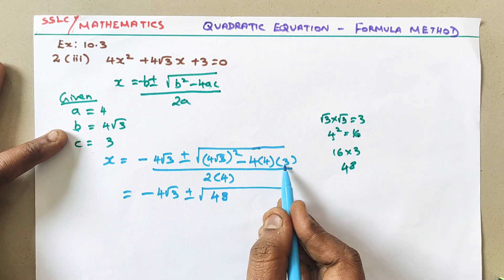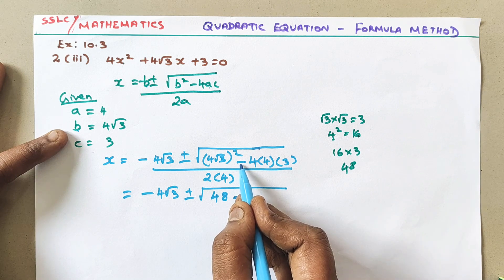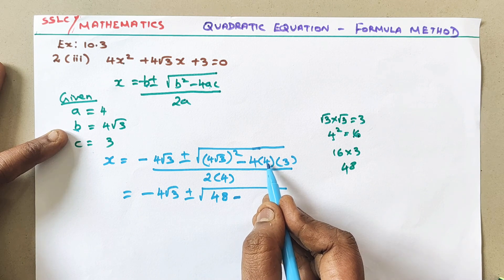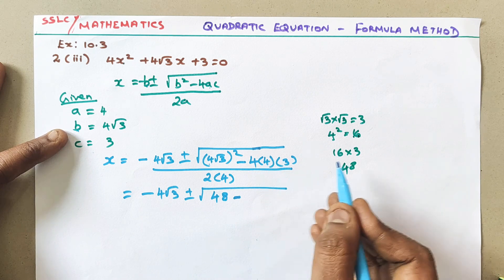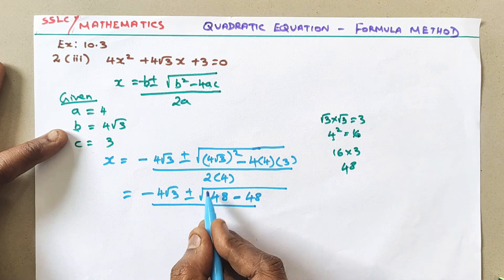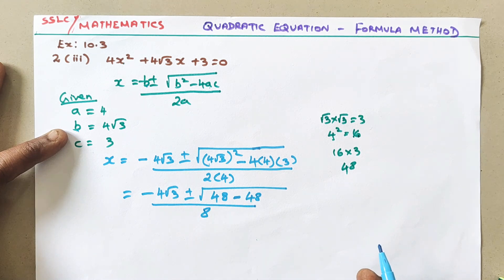Here other numbers are positive numbers, so negative. Because minus times plus it will be minus. Now 4 fours are 16. 16 × 3. Again 16 × 3 is 48. Divided by 2 × 4. Two fours are 8. Is it clear children?